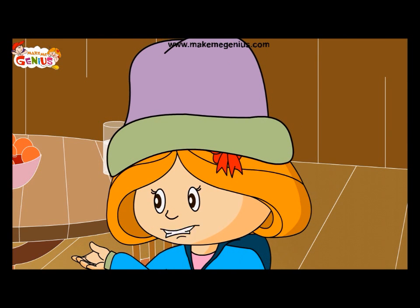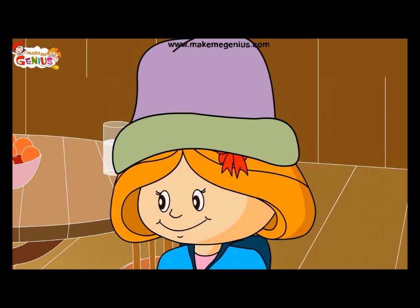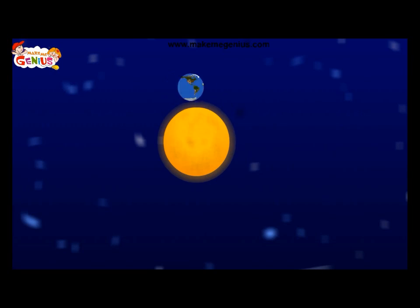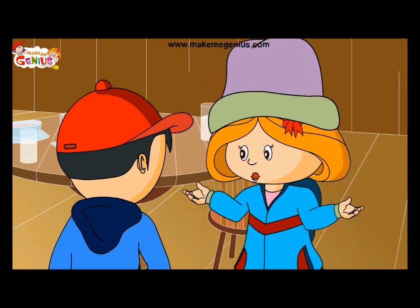There are mainly two reasons for seasons. First reason is the Earth's movement around the sun. This happens due to the Earth's trip around the sun. I learnt that the Earth takes 365 days to take one trip around the sun. Absolutely right!